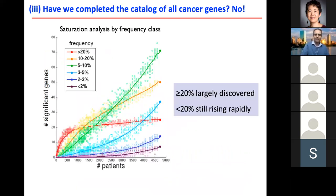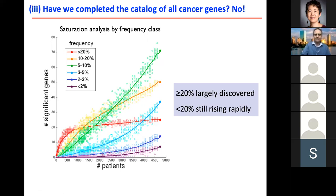We looked at different categories of genes: those mutated in more than 20% of patients of a particular tumor type are essentially saturating — we are not finding new genes in that range. The 10–20% range is starting to maybe saturate. But the 5–10% and below are still growing and even accelerating, so we can definitely find more cancer genes as we add more samples.